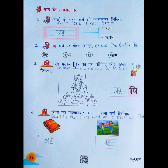And the fourth one: Chitra ko pahichan kar unka pehle varna likiye — identify the picture and write the first letter. What is the first picture? Rigved. What is the first letter? R. You have to write the R. Second picture? Ritu. You have to write R.